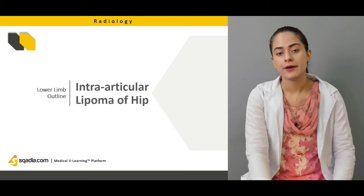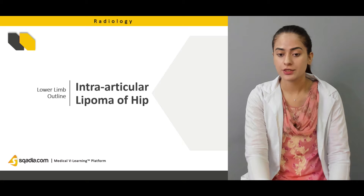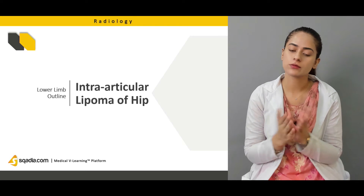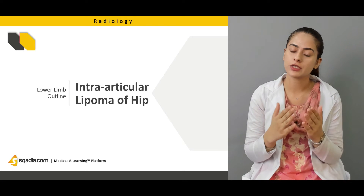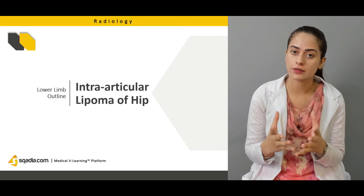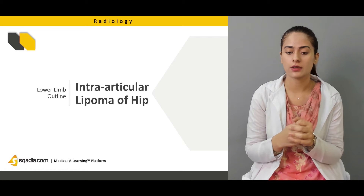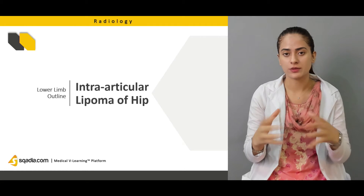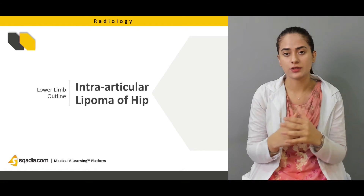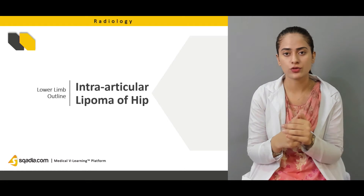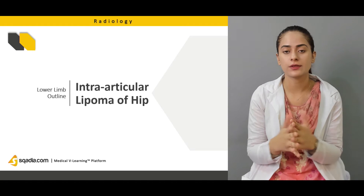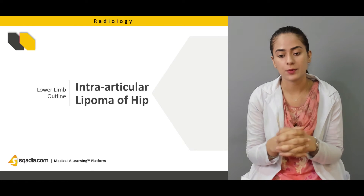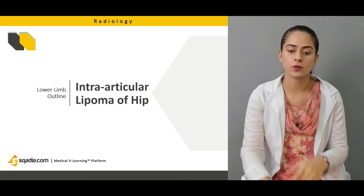We're going to talk about intra-articular lipomas, as we discussed for the upper limb. Lipomas are fat accumulations in proximity with the joint, inside the joint, or close to the joint. We're going to see what lipomas are and how they appear on the radiograph.